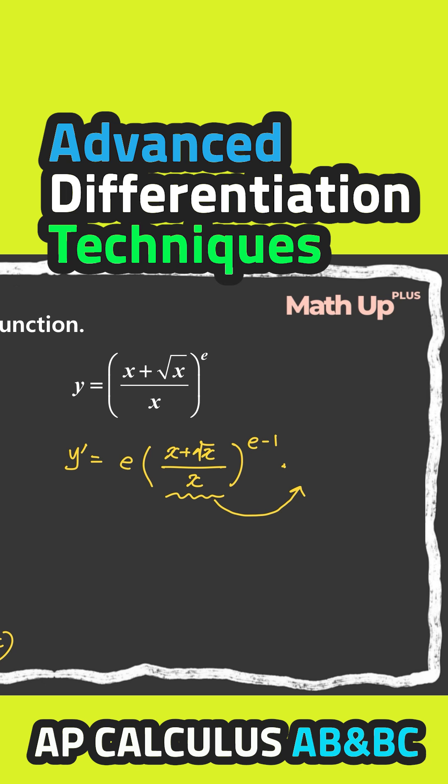Before we do that, if we simplify this expression, x plus square root of x over x, that is equal to x over x plus square root of x over x, and this is equal to 1 plus 1 over square root of x.